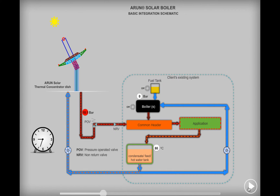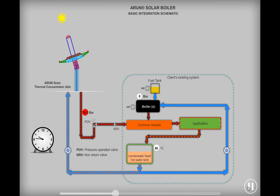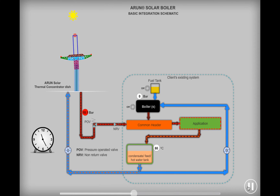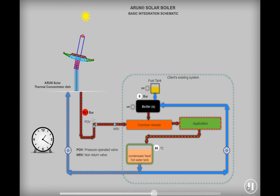As a result of the steam delivery by the Arun solar boiler, the existing boiler will automatically switch off and stop consuming any fuel. In case the quantity of steam required by the various applications is higher than the steam delivered by Arun, the existing boiler will deliver the balance steam requirement. Since the quality of steam from the solar boiler is the same as that delivered by the conventional boiler, from the process or application perspective it will not make any difference as to which boiler is delivering the steam.